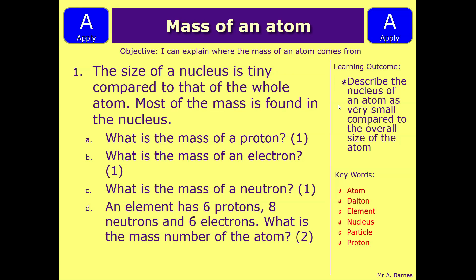And D, an element has 6 protons, 8 neutrons, and 6 electrons. What is the mass number of the atom? So pause the video, have a think, have a go at it, and then we'll see if you're right.